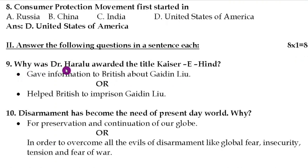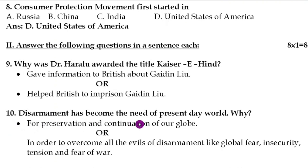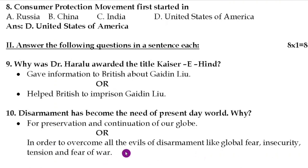Question number nine: why was Dr. Haralu awarded the title Kaiser-e-Hind? The correct answer is he gave information to the British about Guiding Loo, or helped the British to imprison Guiding Loo. Question number ten: disarmament has become the need of the present-day world — why? The answer is for preservation and continuation of the globe, or in order to overcome all the evils of disarmament like global fear, insecurity, tension and fear of war.